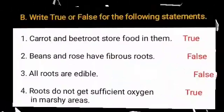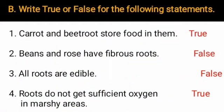Question B: Write true or false. One — carrot and beetroot store food in them. Yes, these are edible roots so they store food in them. This is a true statement. Two — beans and grass have fibrous roots. No, these plants have tap roots. This is a false statement.